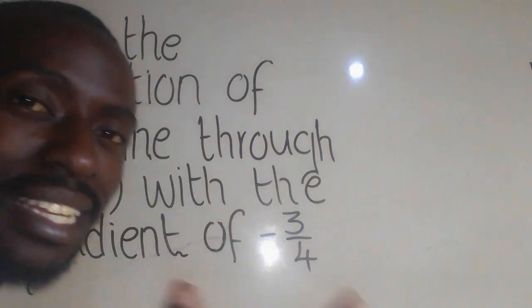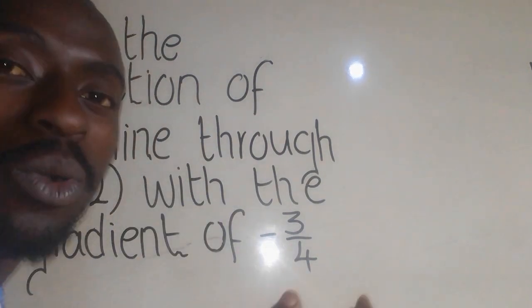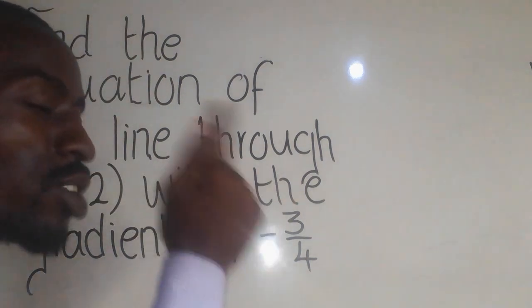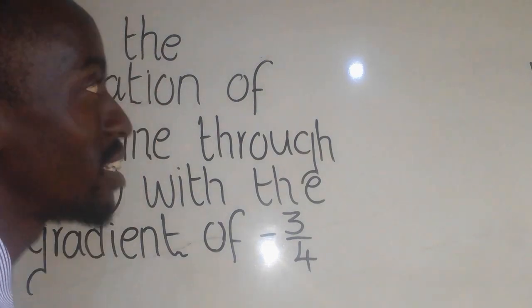When they say equation, it's just a mathematical statement which relates all the coordinates of that line here. Now, the equation of a line is given by this.